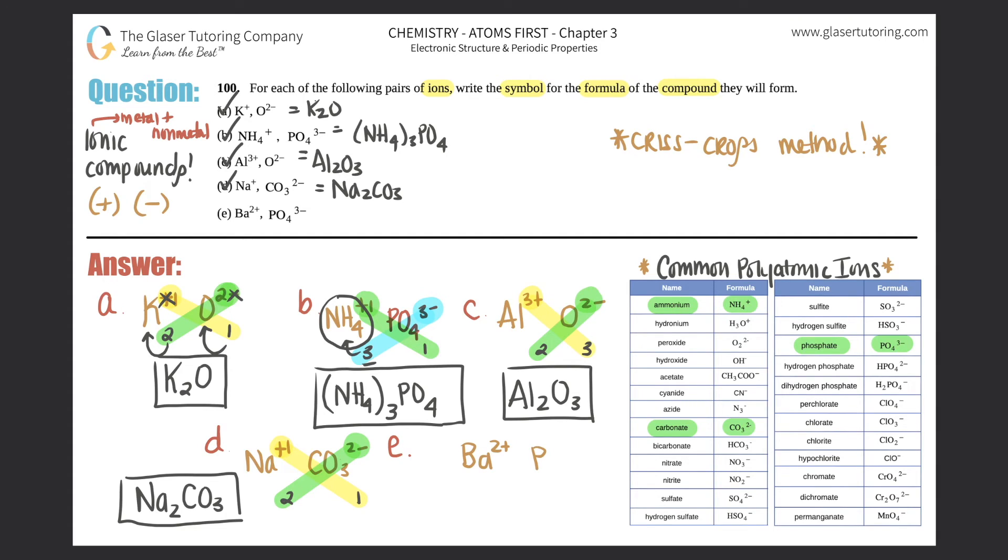Last but not least, we have Ba, barium with a 2+ charge, coming in with phosphate PO4 3-. Crisscross method: this two crisscrosses down telling us we should have two whole phosphates. I have multiple polyatomics so I'm going to use parentheses. The three crisscrosses down telling me I have three bariums. So I can write my compound as Ba3, then I have two whole phosphates in parentheses, so the polyatomic is PO4 but now I have two of them. This one would be Ba3(PO4)2.